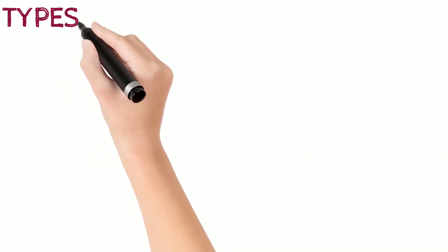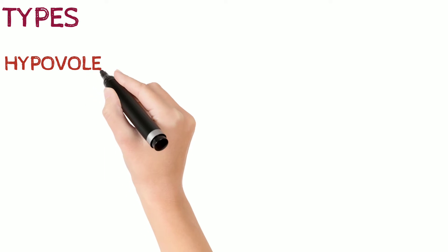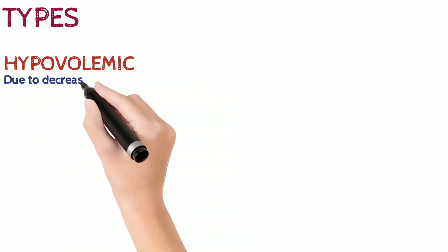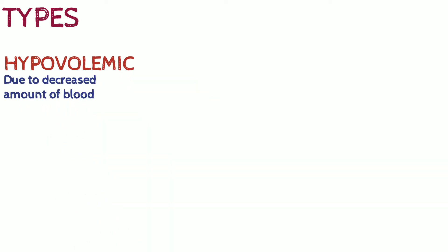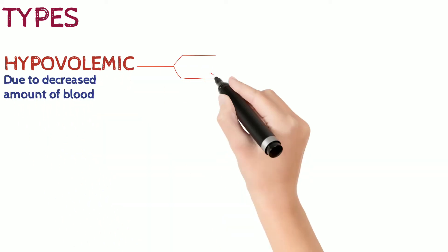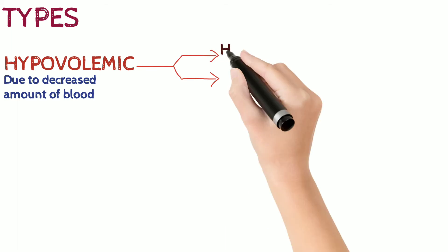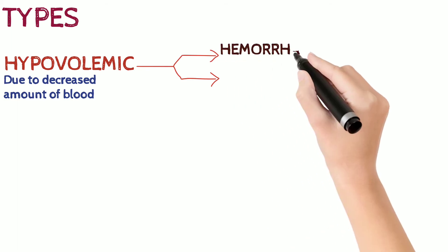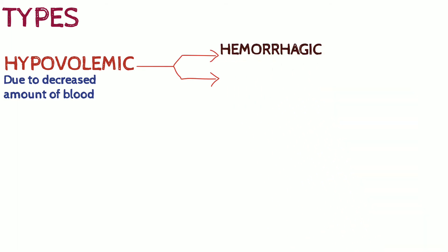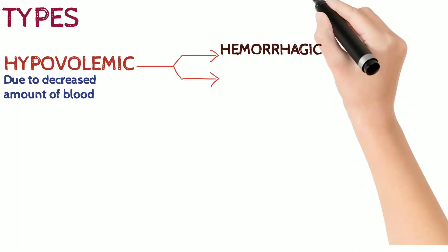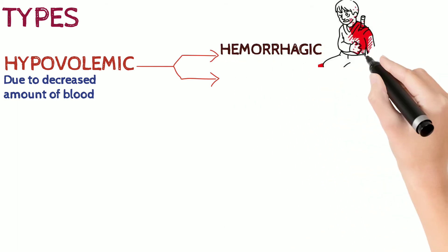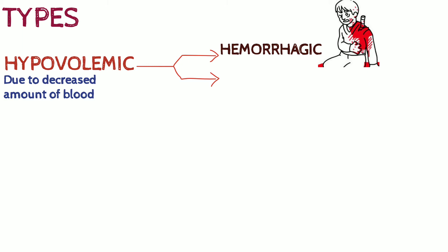As for the types of shock, it can be divided into three main types. The first is hypovolemic shock, which occurs mainly due to a decreased amount of blood, and which can be further classified into hemorrhagic shock and non-hemorrhagic shock.